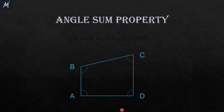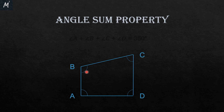Angle sum property of a quadrilateral. The name itself tells us it is about the sum of all the angles in a quadrilateral. So if we have a quadrilateral a, b, c, and d, the sum of angle A, angle B, angle C, and angle D will be equal to 360 degrees.